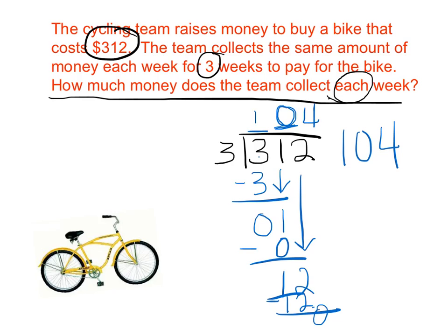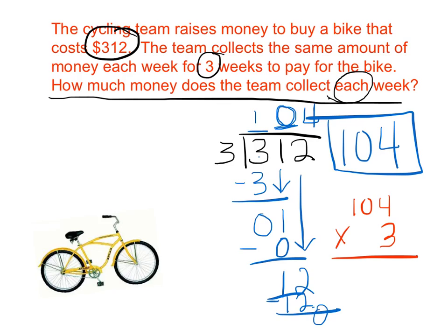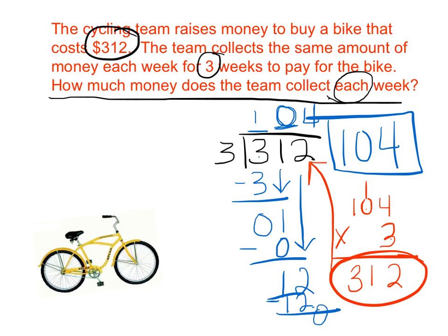If I want to be a good math student, I can check my work — and I do want to be a good math student. So I'm going to multiply the quotient times the divisor. 4 times 3 is 12. 3 times 0 is 0, plus 1 is 1. 3 times 1 is 3. My product is the same as my dividend.